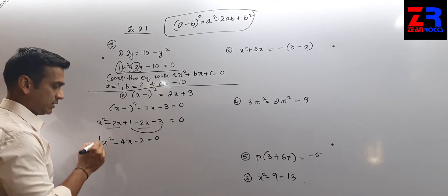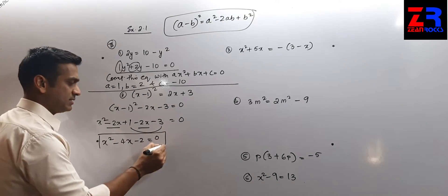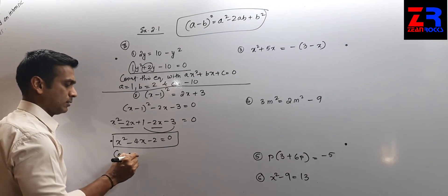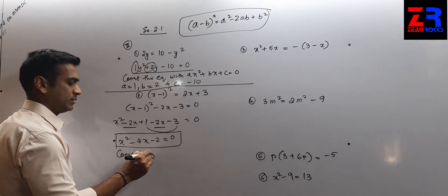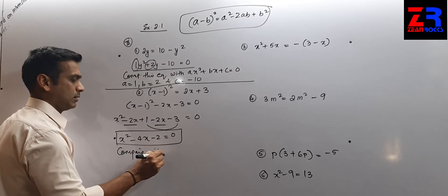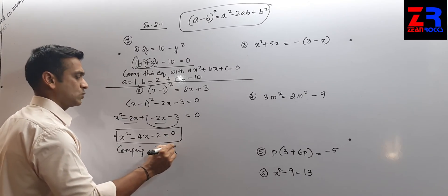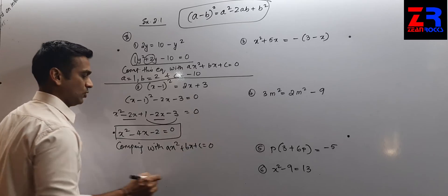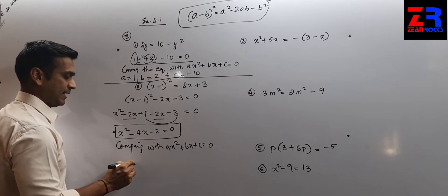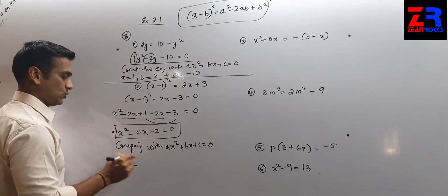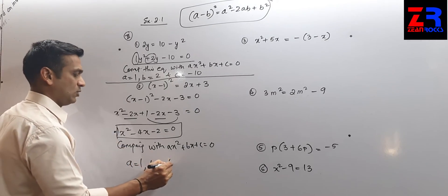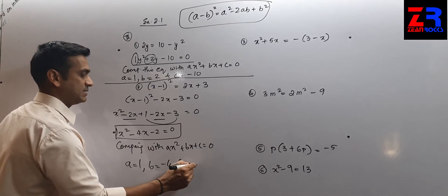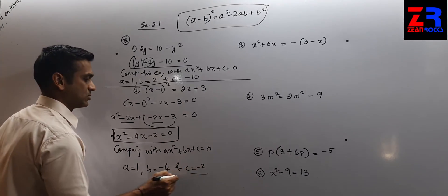Comparing with ax² + bx + c = 0, we get a = 1, b = minus 4, and c = minus 2.